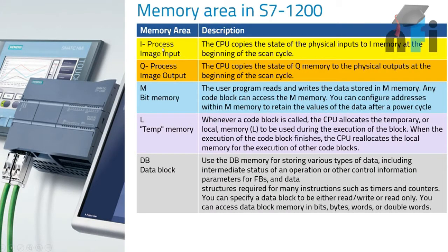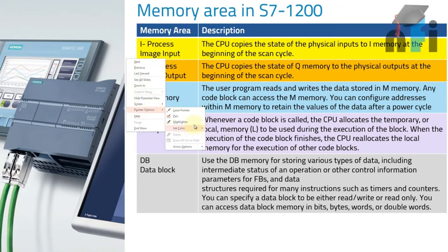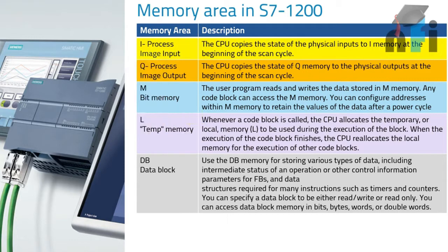First is process image input. We have a special memory allocated for inputs — this memory area is dedicated to inputs, which will read the status of inputs and store their status in memory. The CPU copies the state of physical inputs to iMemory, which is the input process memory, at the beginning of the scan cycle.